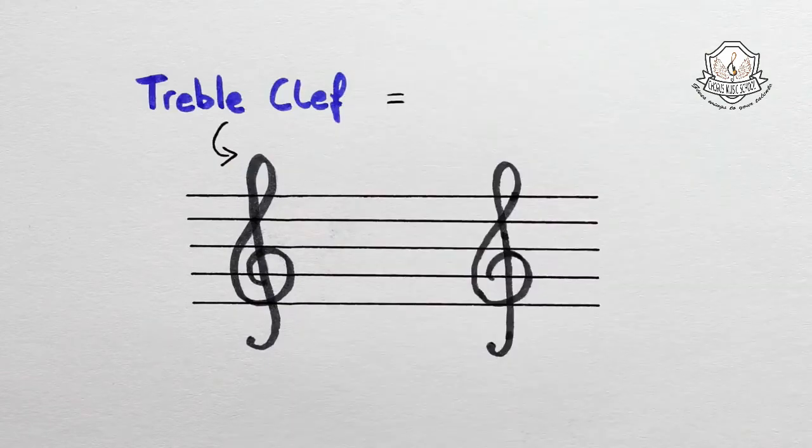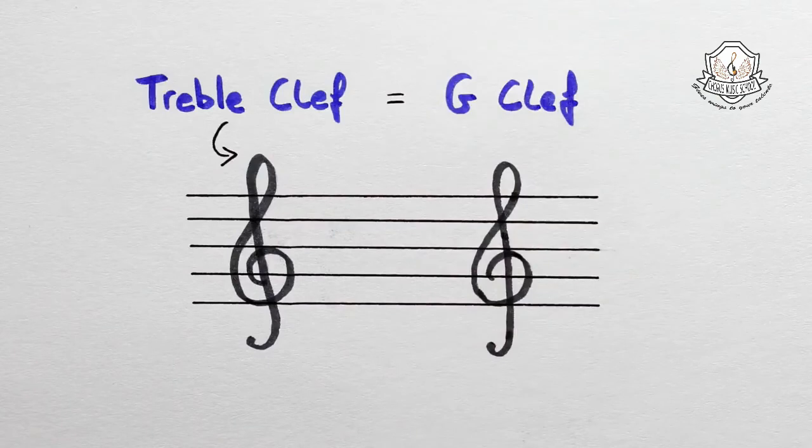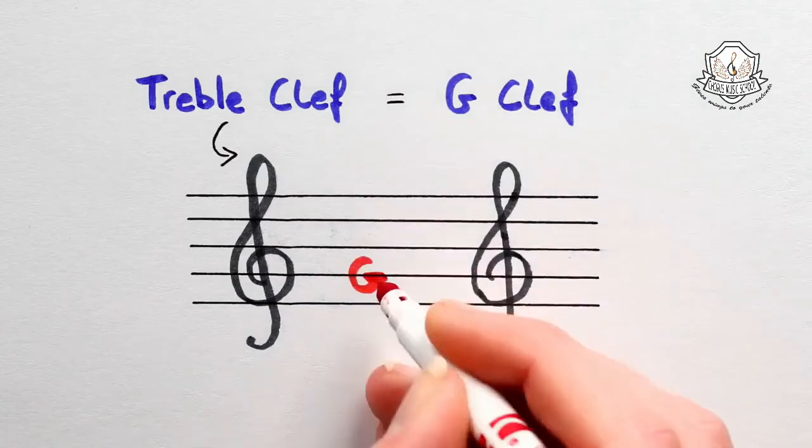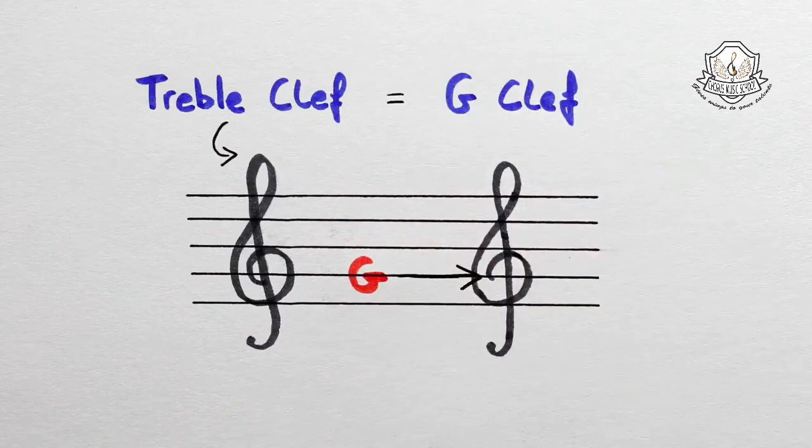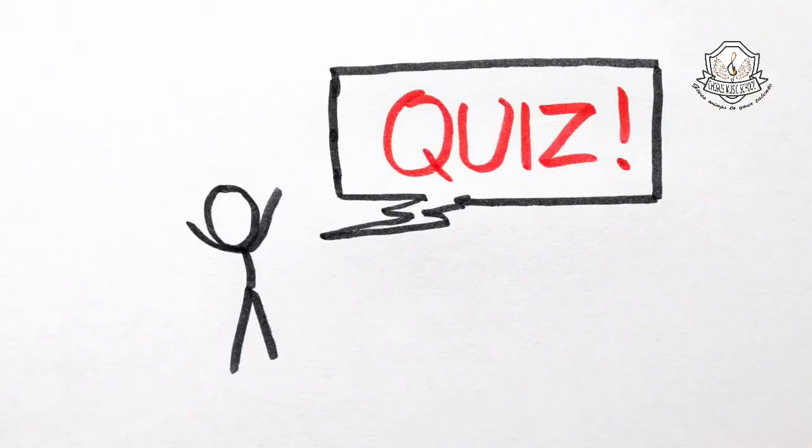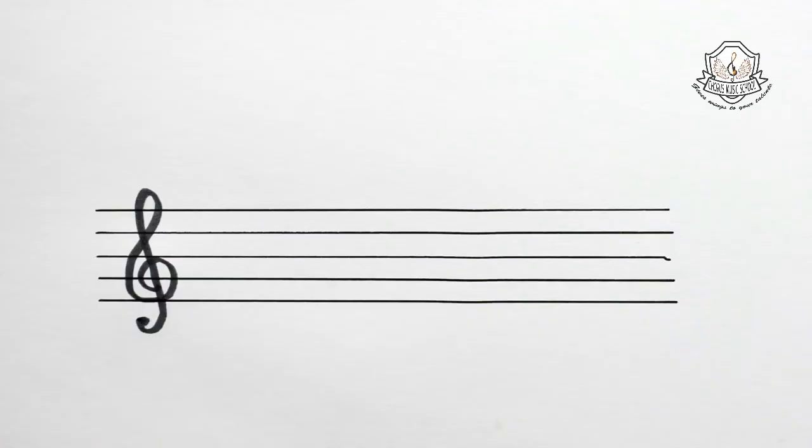Remember, the treble clef is also called the G clef. That's because when we place it on the stave, it gives the name G to the line where the sign starts. One perfect looking treble clef, done.